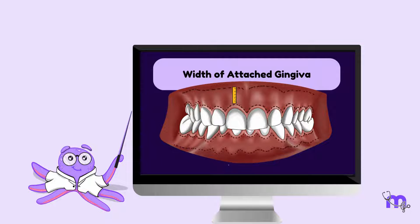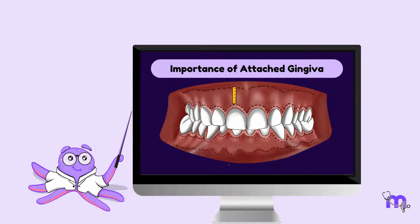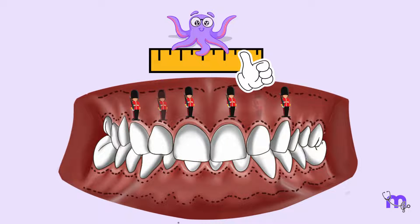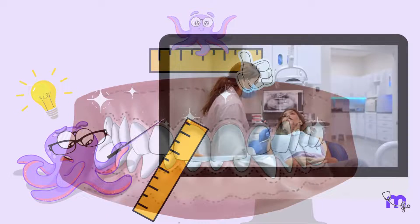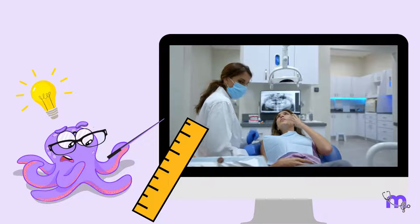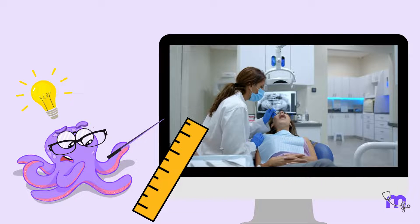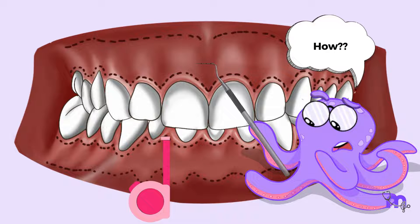Hi there! Welcome to the second video of our Gingiva series. In the previous video, we learned about the importance of the attached gingiva. An adequate width of attached gingiva prevents the spread of inflammation and helps in maintaining a healthy periodontium. Some researchers also believe that the width of the attached gingiva helps to determine disease prognosis and treatment outcomes. Thus, it is important for a dentist to understand how to measure the width of the attached gingiva, which we will now discuss in this video.